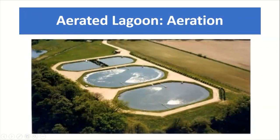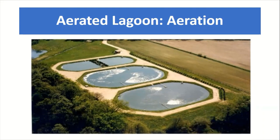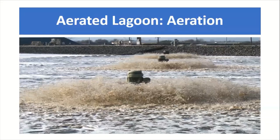This is a pictorial image of the aerated lagoon showing three types. In that lagoon, the electric motor is fitted at the bottom for the purpose of producing aeration to the wastewater. You can see the motor and the aeration system for the aerated lagoon.